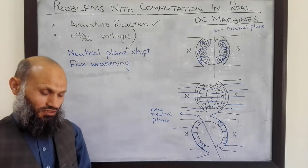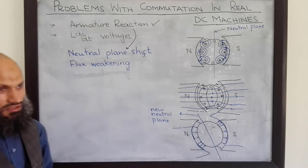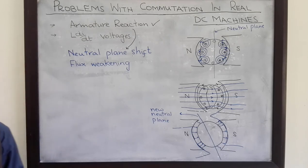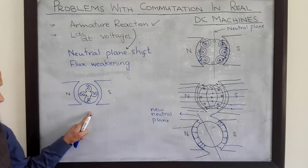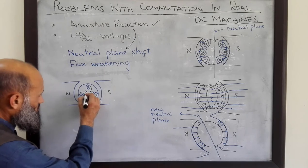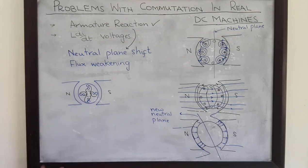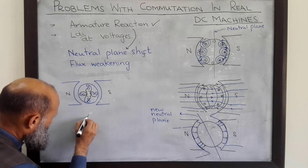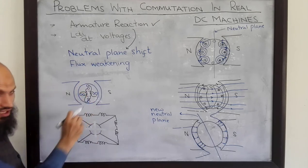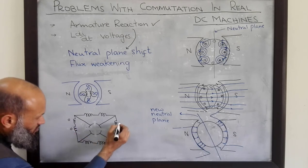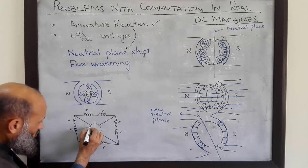What is the drawback of this neutral plane shift? To understand the drawback, let's again consider the situation of commutation in the case of the four-loop machine that we have already talked about. This is the figure we already discussed when talking about commutation in the four-loop DC machine. Brushes were located at this position, and corresponding to this situation, we have drawn a diagram shown here.